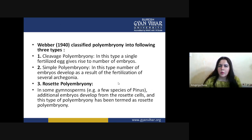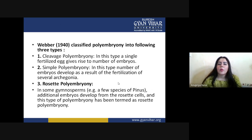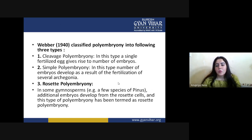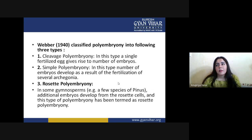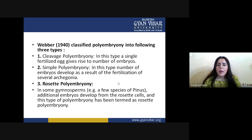Cleavage polyembryony — as the name suggests — involves a kind of breakdown. If any zygote or fertilized egg inside the plant gets cleaved by some condition, because of this cleavage there may be a multiple number of embryos. If one fertilized egg gets divided into two, two into four, four into eight — this multiplication is rare, but having two embryos from one fertilized egg due to cleavage is basically known as cleavage polyembryony.